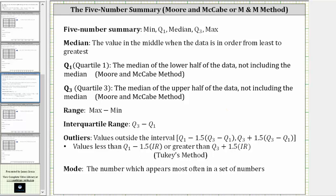And then we'll use Tukey's method to determine the outliers, where outliers, according to this method, are values that are less than quartile one minus 1.5 times the interquartile range, or greater than quartile three plus 1.5 times the interquartile range, where the interquartile range is Q3 minus Q1.